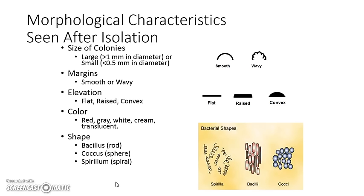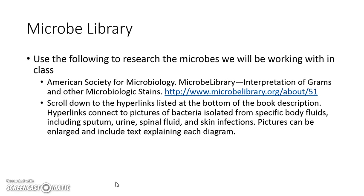The characteristics you'll need to know are size, margin, elevation, color, and shape. If it looks smooth from the side versus wavy, and it can be flat, raised, or convex. If it's large, the colony is bigger than a millimeter; if it's small, it's half a millimeter or less in diameter. Color can vary: red, white, creamy, translucent, see-through. Shape — rod, sphere, or spiral — you won't be able to see until you look under the microscope after gram staining. The Microbe Library is a great resource to find out more about each of the microbes.